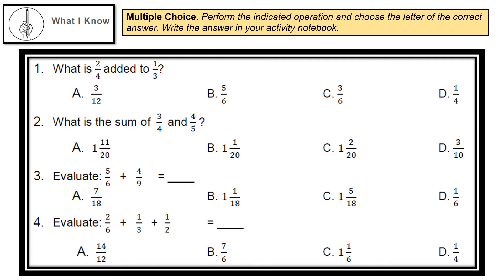Number 1: What is 2/4 added to 1/3? A. 3/12, B. 5/6, C. 3/6, or D. 1/4.